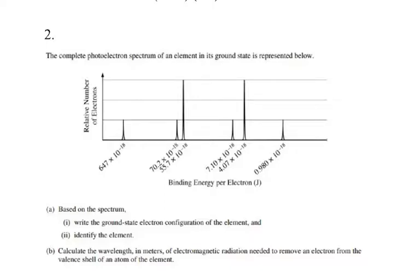Now let's move on to the second question. The complete photoelectron spectrum of an element in its ground state is represented below. For photoelectron spectrums, one peak corresponds to 2 electrons, and since another peak is 3 times as much we can assume it went to 6 electrons, with 4 in between.